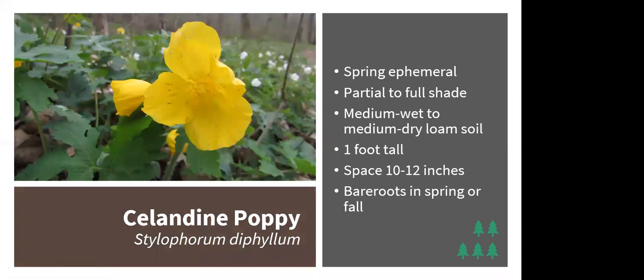Celandine poppy is one of my favorites. It does well in partial to full shade, can tolerate soil that's a bit drier or wetter than medium, and prefers loam. Plants grow about 1 foot tall and spread through reseeding. Plant bare roots in spring or fall. The foliage is toxic to mammals, so you shouldn't have too much browsing by deer or rabbits.